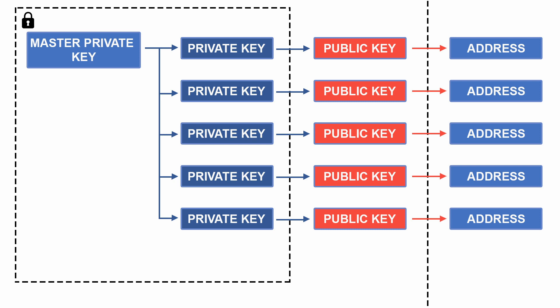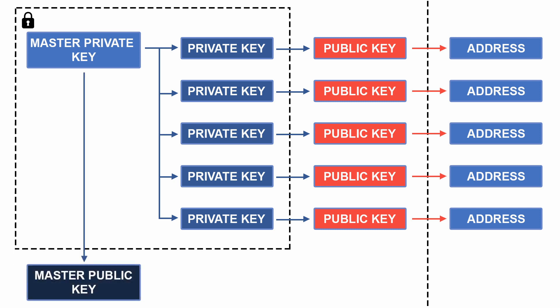Another thing suggested in BIP 32 is the master public key. The master public key cannot generate private keys, but it can generate any public keys. So when do we use the master public key? It is used when we do not need to send transactions — like an auditor who is just there to verify. In cases like this, the master public key is used. As we know, the public key is used for verification, and we can generate all public keys from the master public key.